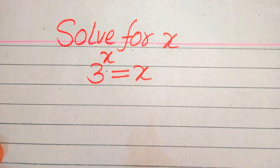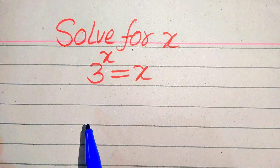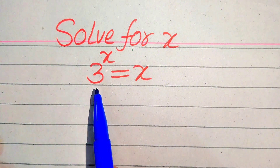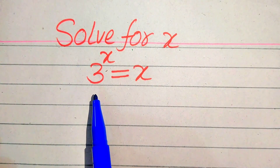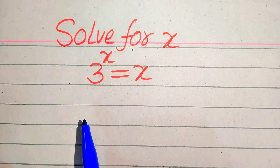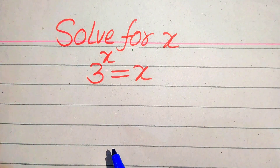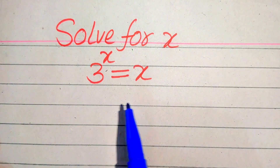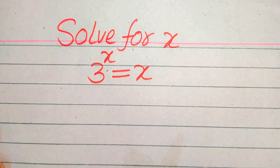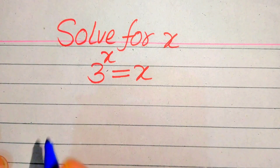Here you can see that this is an exponential equation because an exponential function lies on the left hand side of this equation. In order to find the values of x, we need to take the log on both sides of this equation. We will solve this problem with the help of natural log.